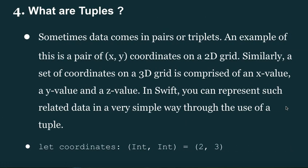What are tuples? Sometimes data comes in pairs or triplets. An example is a pair of x, y coordinates on a 2D grid. Similarly, a set of coordinates on a 3D grid is comprised of an x value, a y value, and a z value. In Swift, you can represent such related data in a simple way through the use of a tuple.